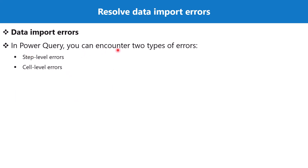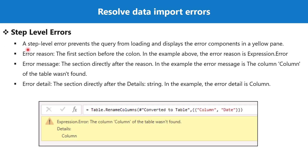When working in Power Query we can encounter two types of errors. The first type is step-level errors and the second type are cell-level errors. A step-level error prevents the query from loading and displays the error components in a yellow pane. This yellow pane has three distinct areas: the error reason, which appears before the colon; the error message, such as 'the column of the table wasn't found'; and the error detail, which shows additional detail related to the error.